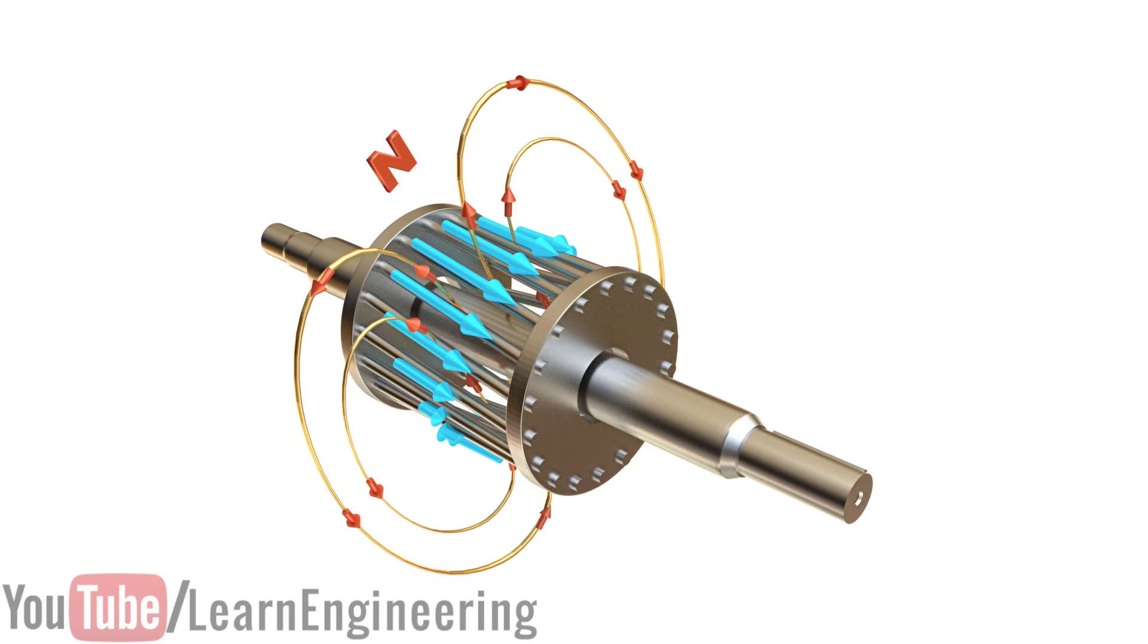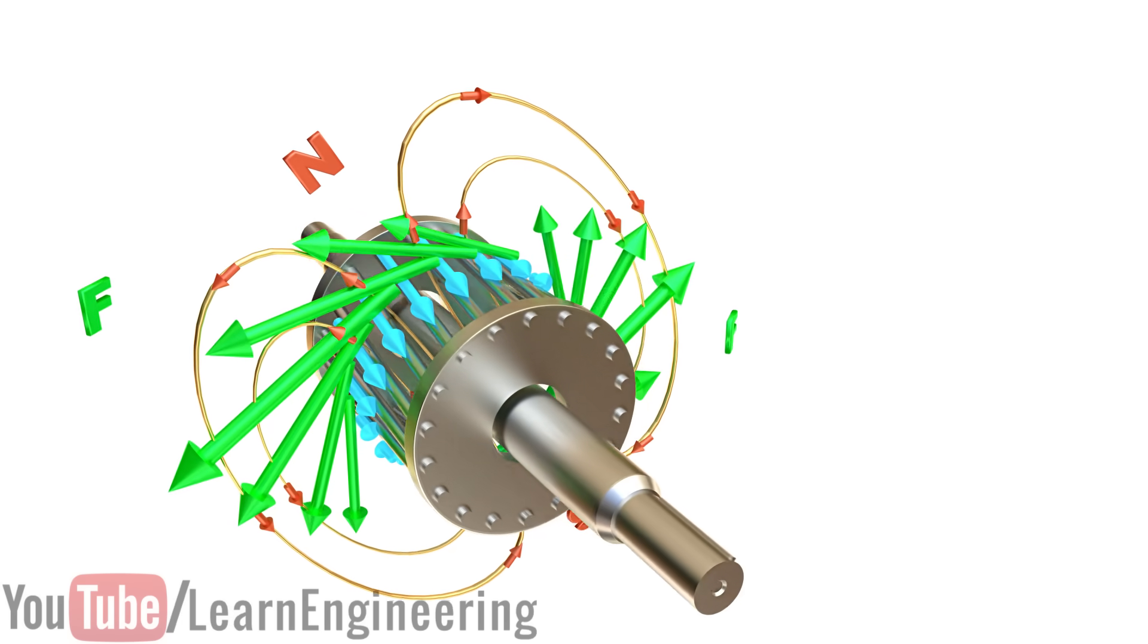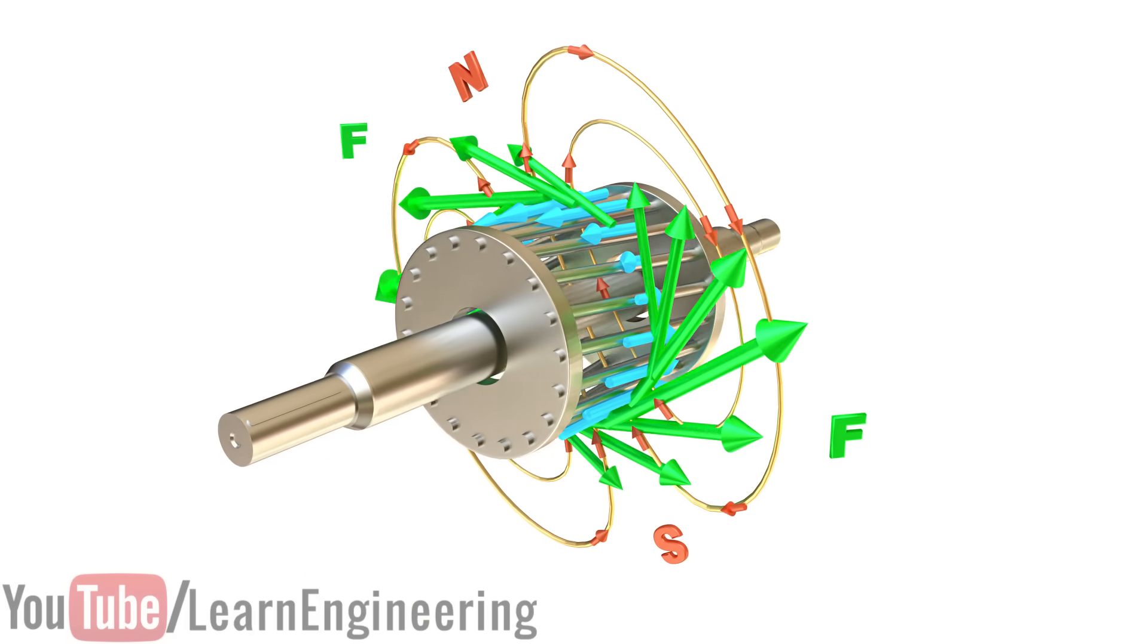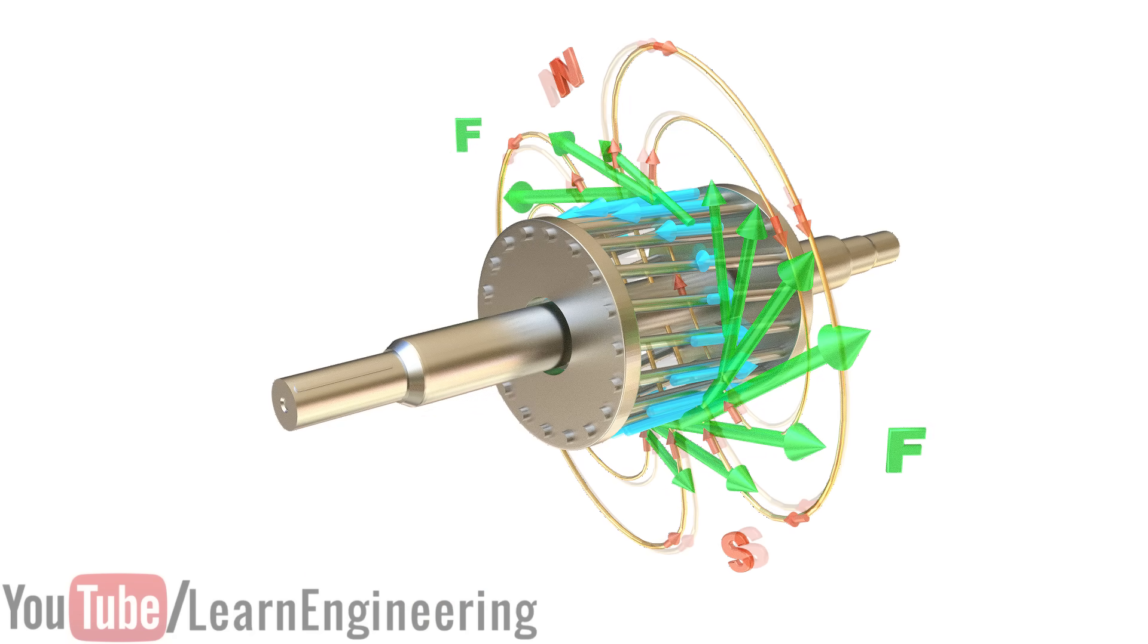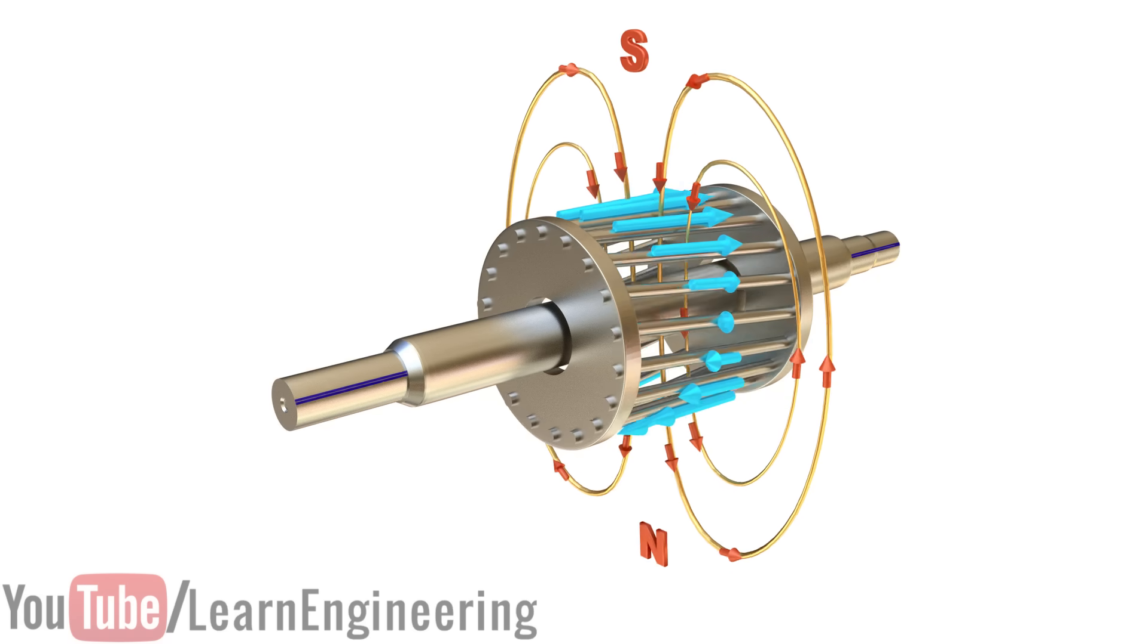According to Lorentz's law, when a current-carrying conductor is placed in a magnetic field, it will experience force. You can see the force distribution on the different bars at a particular moment in time. These collective forces make the rotor turn.